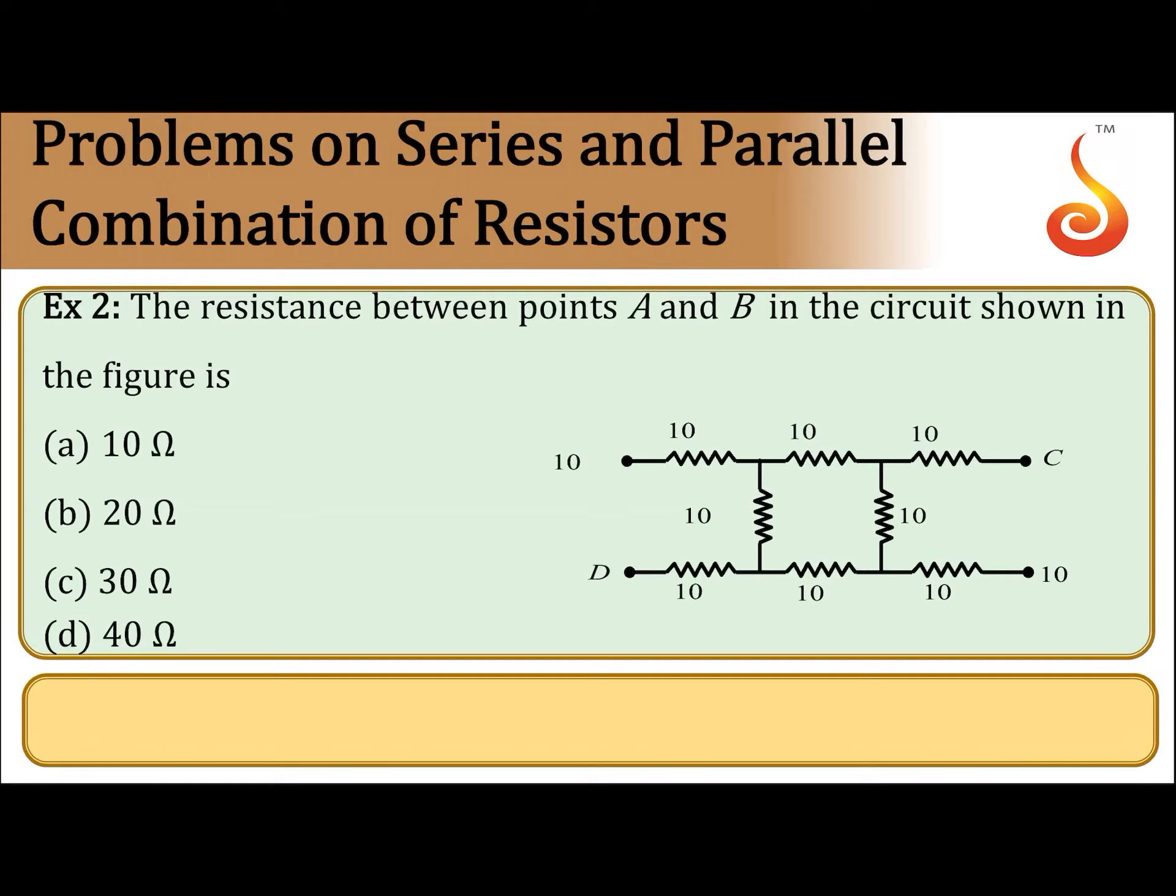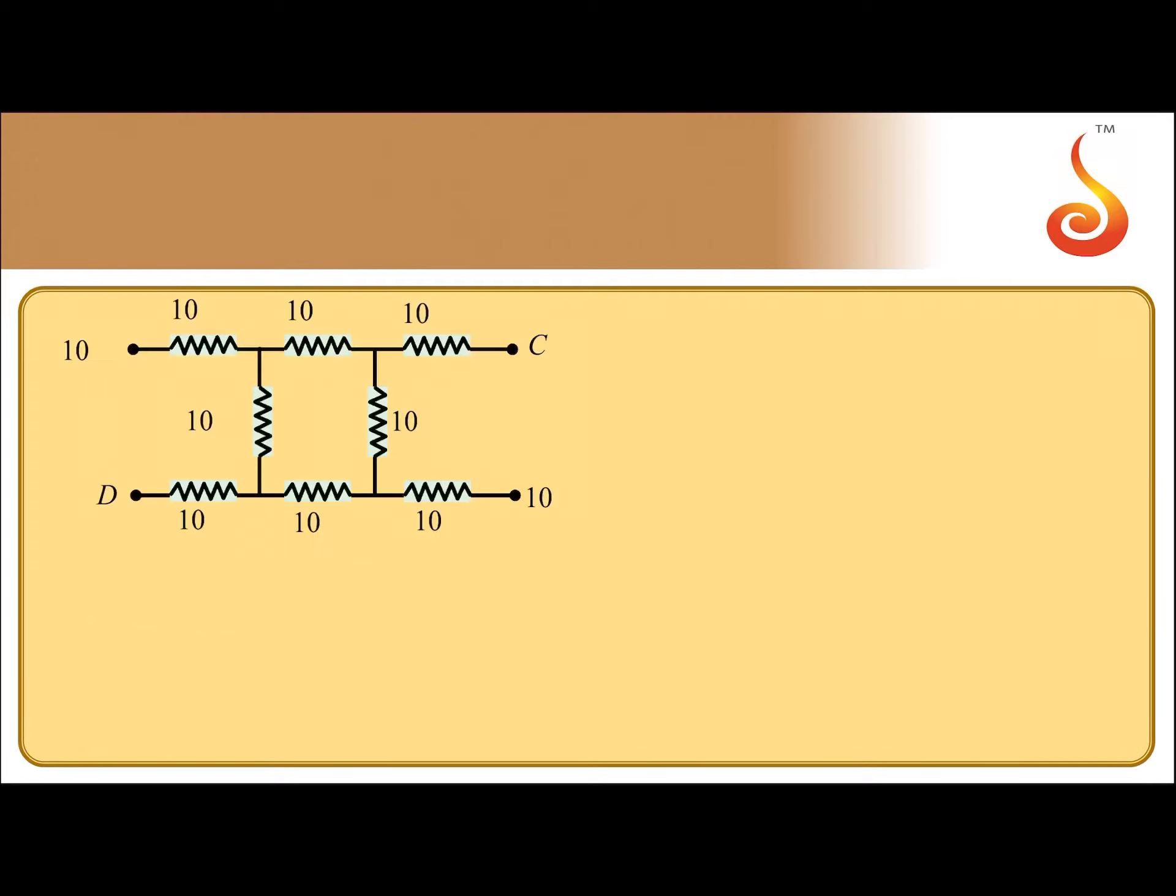All resistances are 10 ohm. Between points A and B you have to find the equivalent resistance. Now this is point A, this is point B.